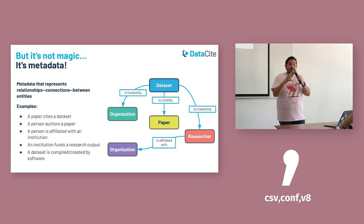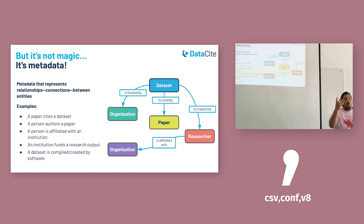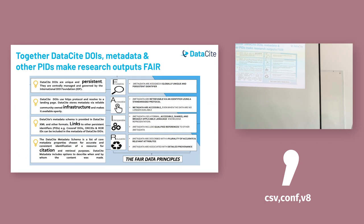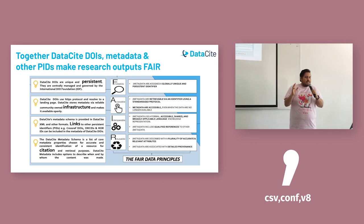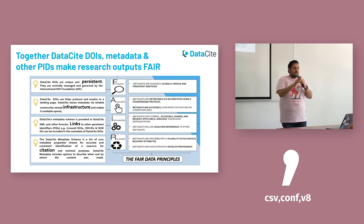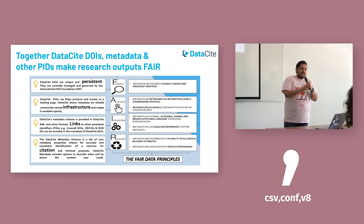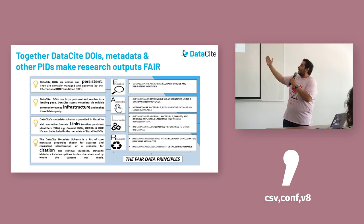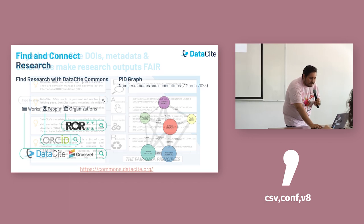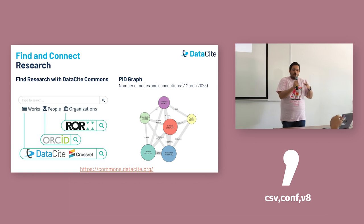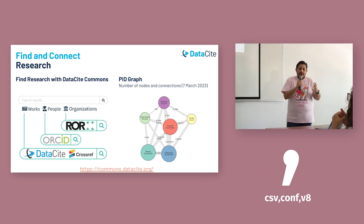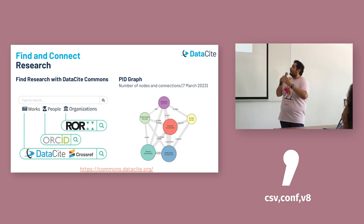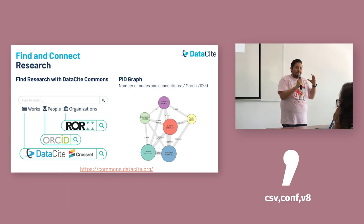Metadata can help facilitate interoperability between persistent identifiers, persistent identifier systems, and the open research infrastructure in general. With this persistent open infrastructure, including interoperable links, the metadata can be cited, reused, and reproduced. Metadata can help us make research outputs FAIR. Researchers, their organizations, and their outputs are all interconnected in real life, and metadata can help make these connections visible and transparent.